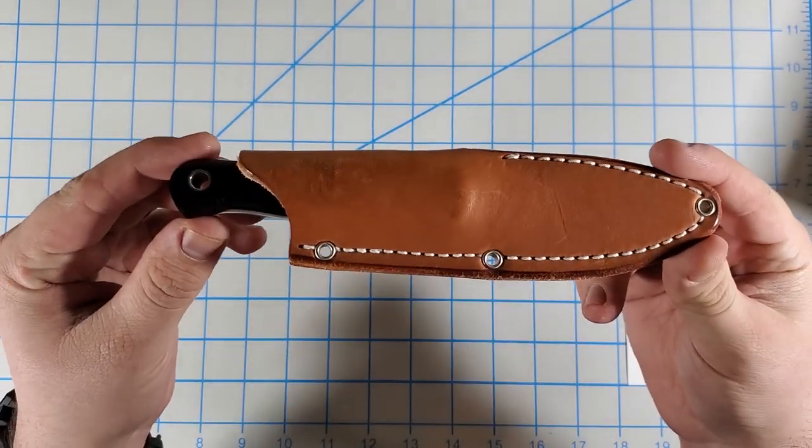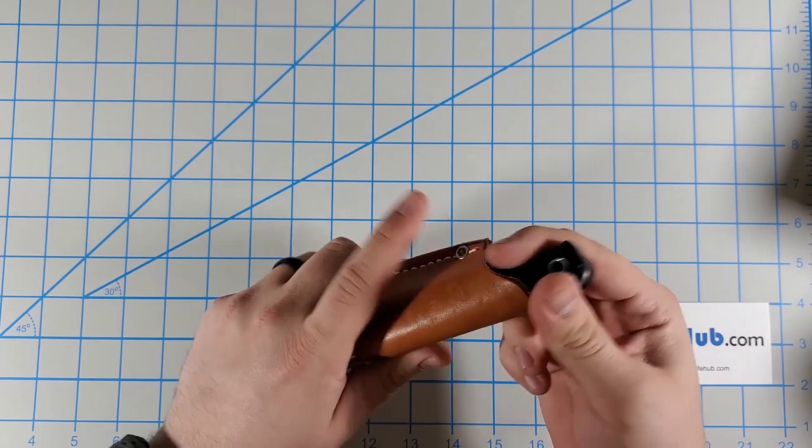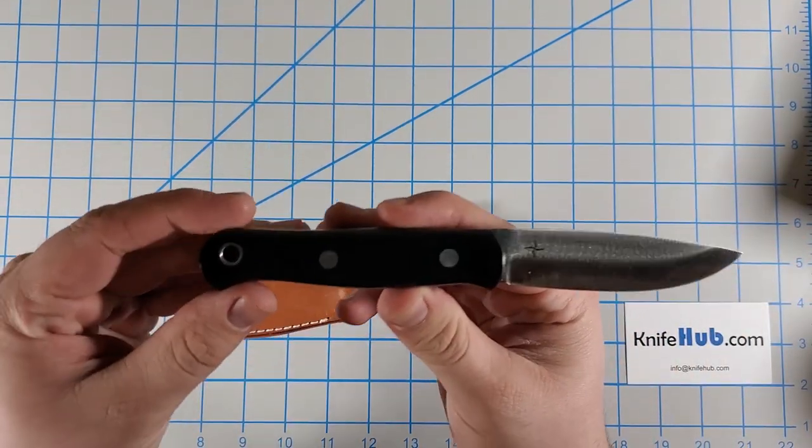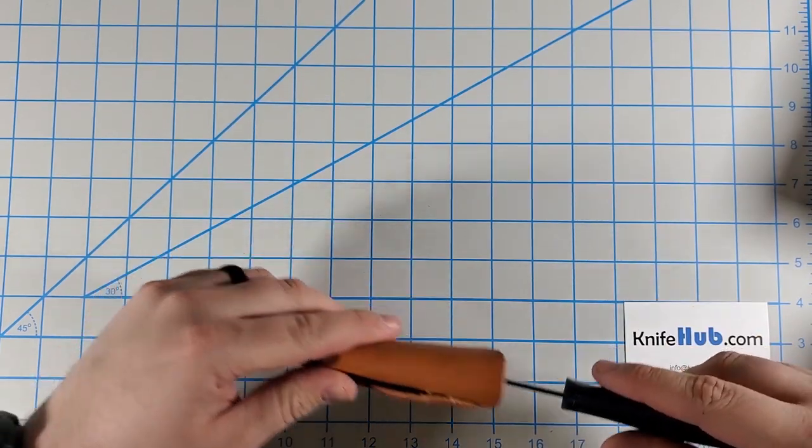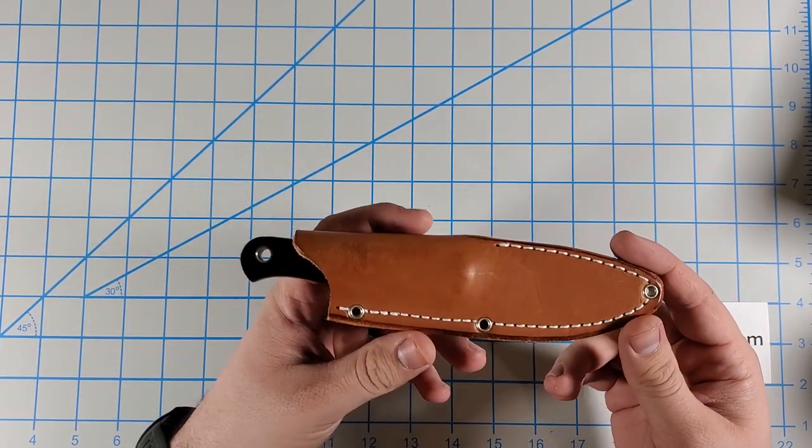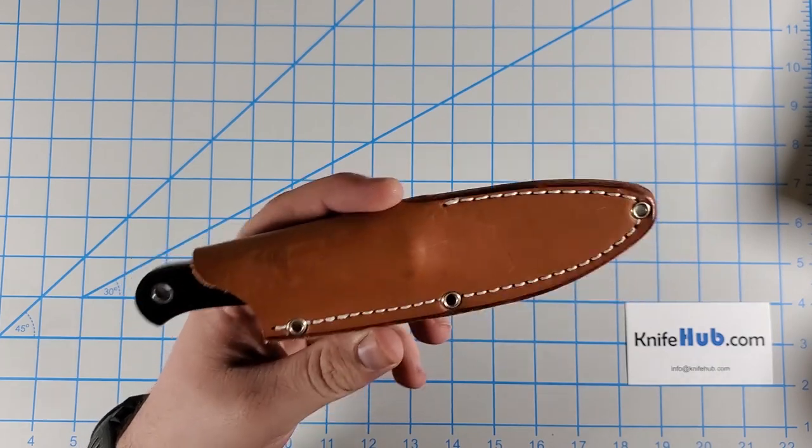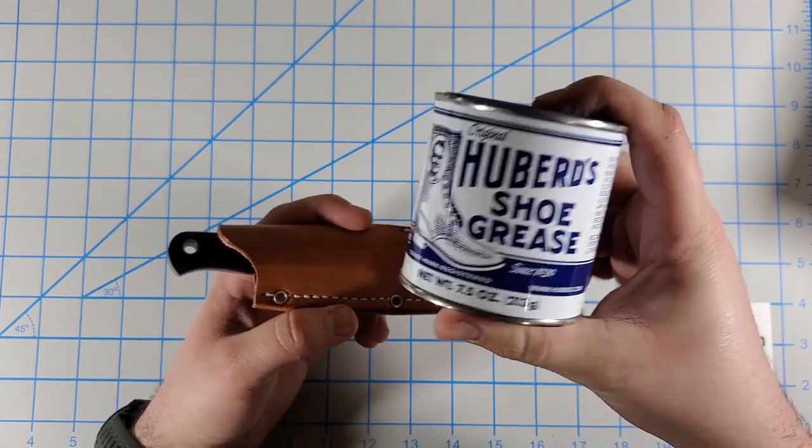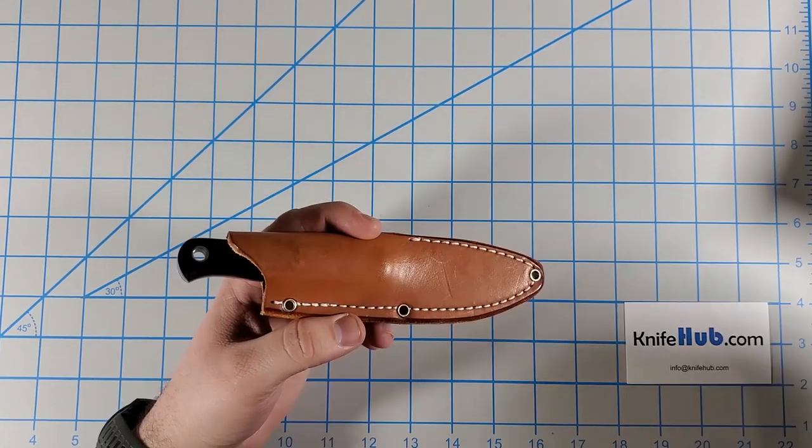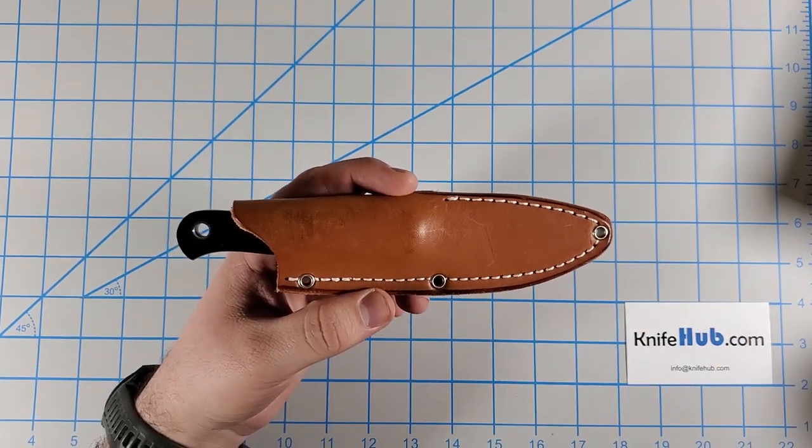But we're going to treat the leather sheath for this Bark River Ultralight Bushcrafter. I've been using this a little bit. I watched one YouTube video and read a few blog posts on treating these and a lot of people recommended Hubbard Shoe Grease. So let's give it a try and get into it and see how it goes.